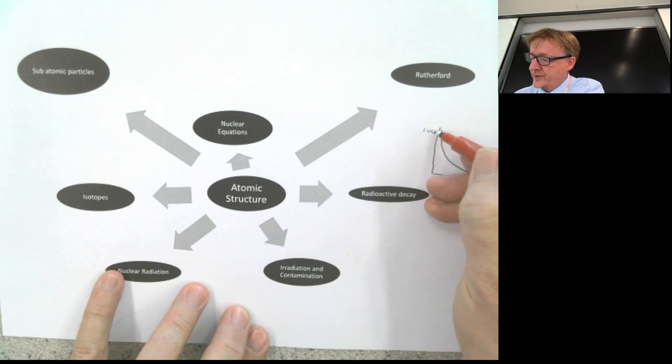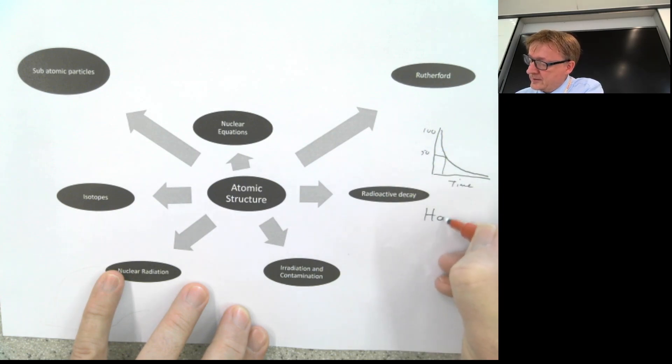So what you can do is if that's 100 there, it goes down to 50, go across, and you go down, and you've got some form of time across the bottom. So radioactive decay, the most important thing is half-life. You need to know about it.